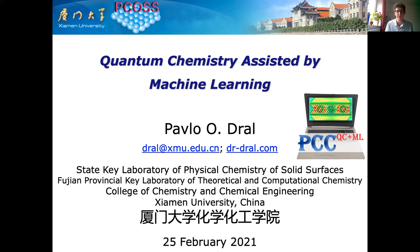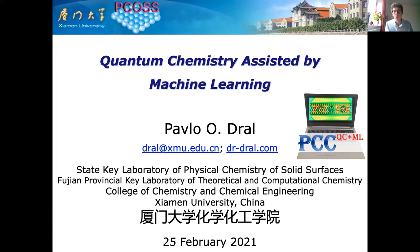I would like to introduce our first speaker, Professor Pablo Dron from Xiamen University. Pablo is originally from Ukraine, did his PhD in Germany at Erlangen-Nuremberg University, then moved to MPI to work with Walter Thiel. Since 2019 he has been an associate professor in theoretical chemistry at Xiamen University, where his group develops various machine learning methods to study chemical processes, in particular accelerating non-adiabatic excited-state dynamics. I recommend his perspective published in the Journal of Physical Chemistry on quantum chemistry in the age of machine learning.